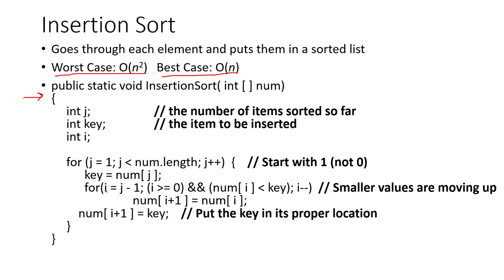We simply go through each element and we put them in a sorted list. Note that we start at the index one because index zero is already, if we just look at the element at index zero, that will be a sorted list because it's just one element. And then we start putting things in the proper location for each one after that.